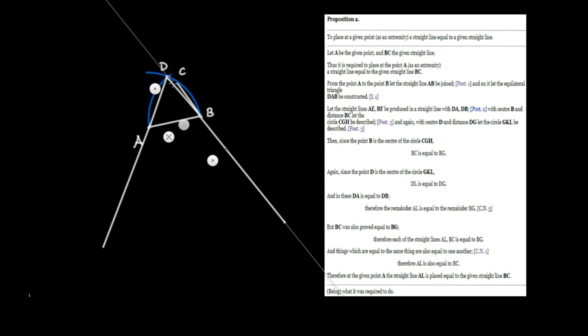The next thing we're going to do is extend the lines DA and DB a bit further. Let the straight lines AE and BF be produced in a straight line with DA and DB, which we can do by the second postulate. We extend these lines in anticipation of a couple of intersections — extend that line that way and extend this line that way. Note these lines originate back at point D. We'll label this one E and this one F.